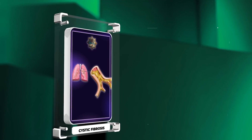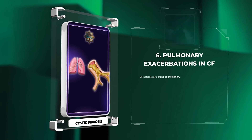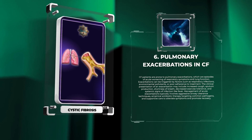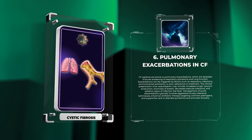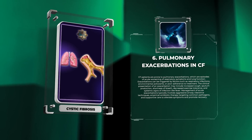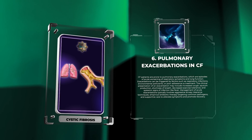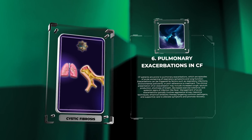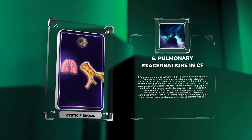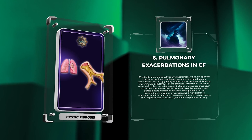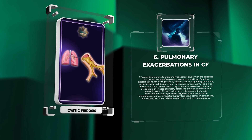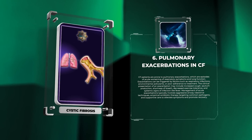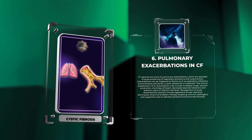CF patients are prone to pulmonary exacerbations, which are episodes of acute worsening of respiratory symptoms and lung function. Exacerbations can be triggered by factors such as respiratory infections, environmental pollutants, or poor adherence to treatment. The clinical presentation may include increased cough, sputum production, shortness of breath, decreased exercise tolerance, and systemic signs of infection like fever.